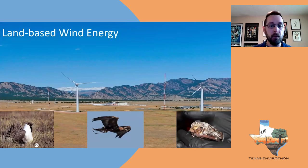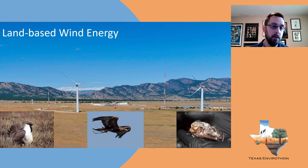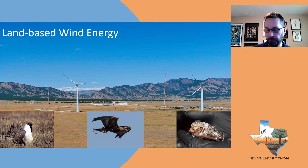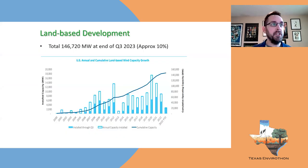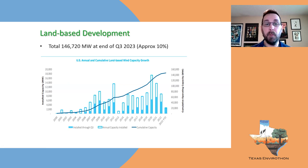For land-based wind energy, the three groups of animals we're primarily concerned about are grouse species, golden eagles, and different species of bats. Just going back to 2000, this shows the cumulative installation of wind energy in the United States. As of fall 2023, we had about 146,000 megawatts of wind energy installed.